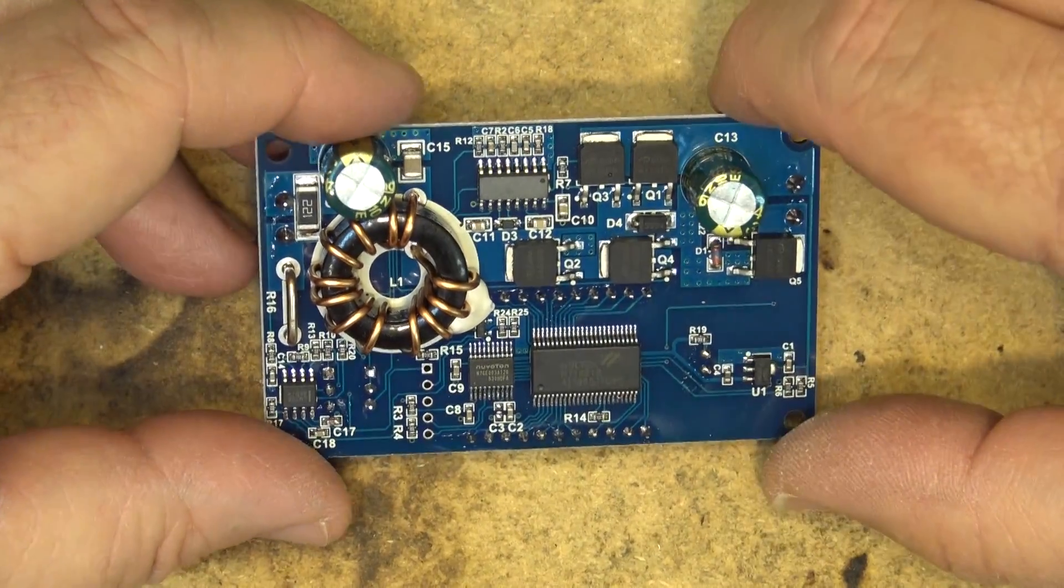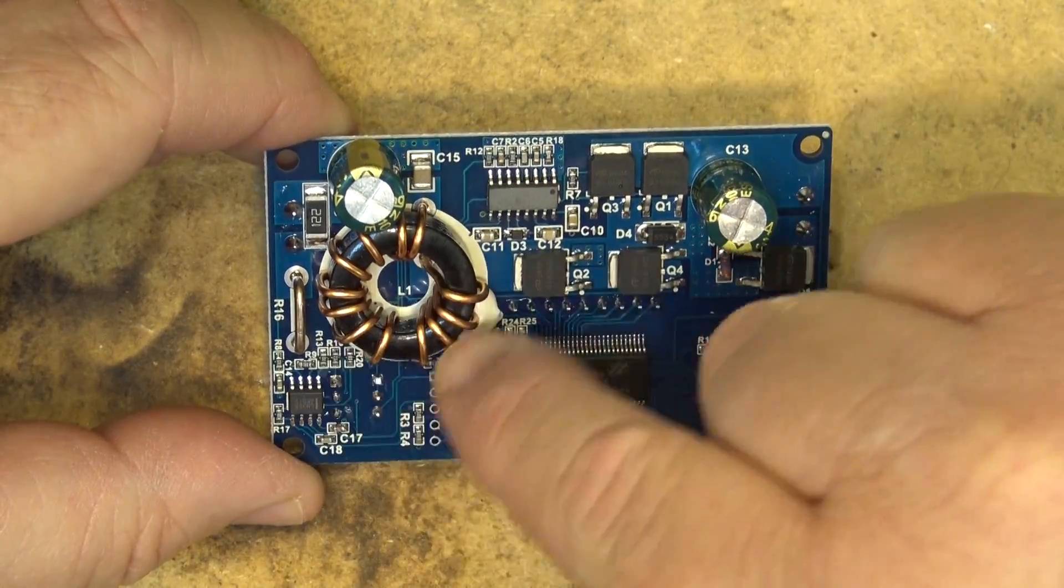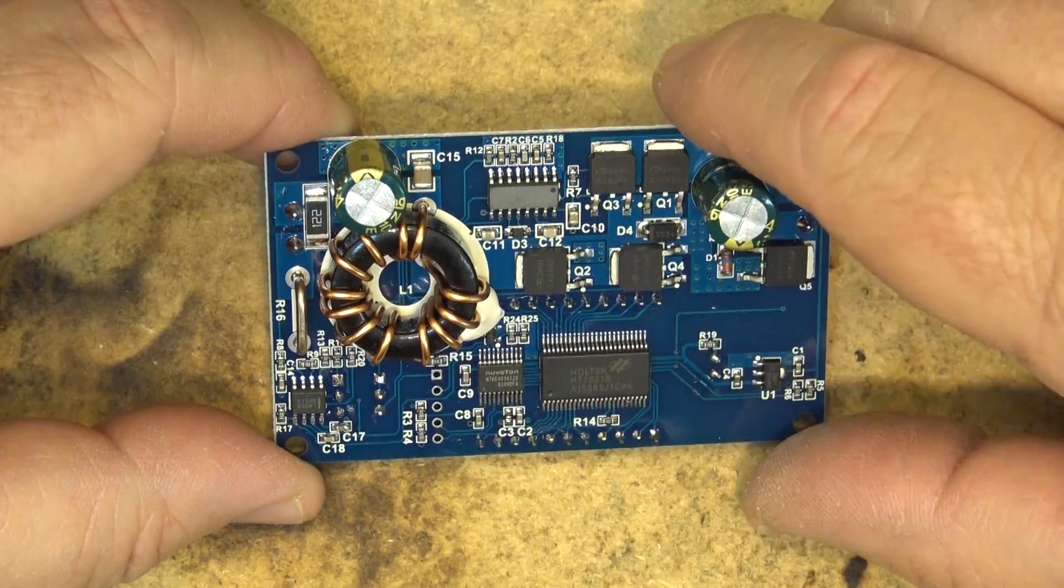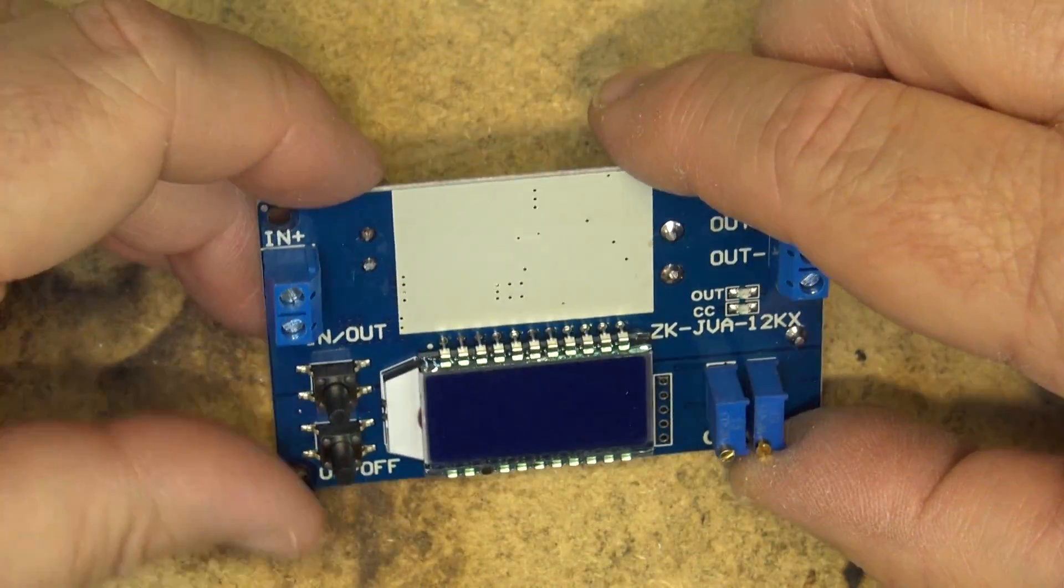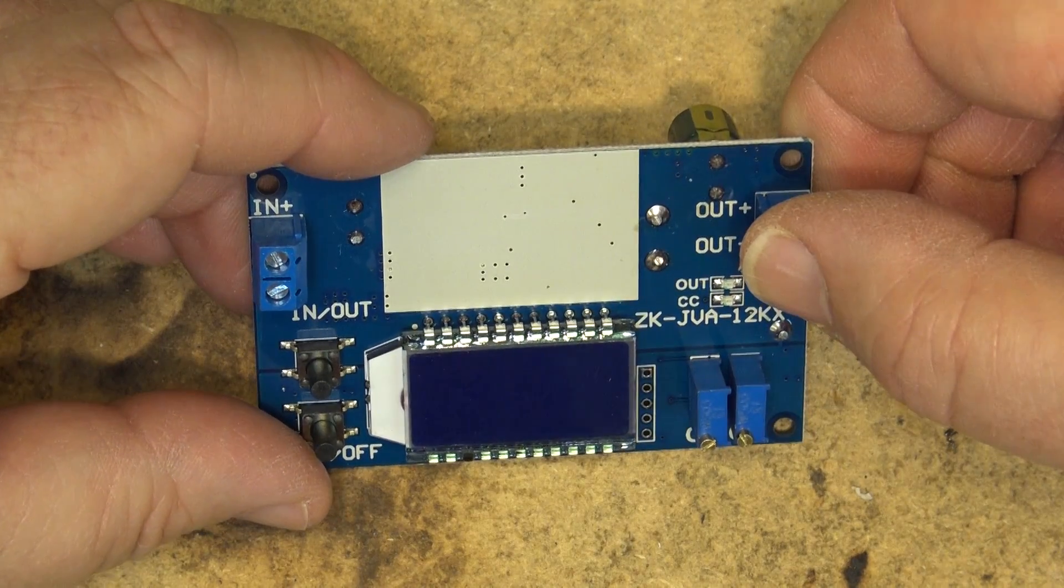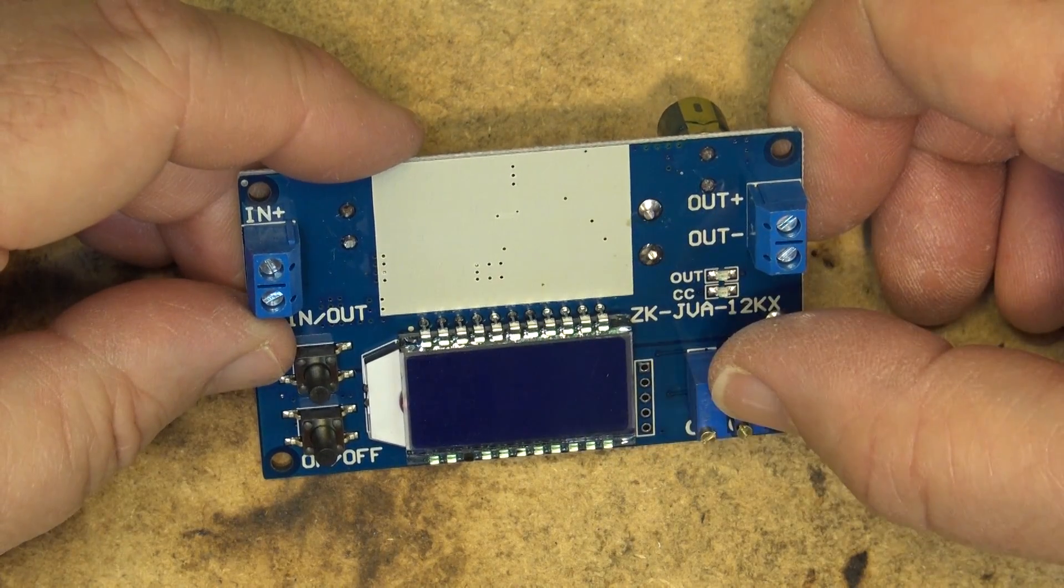So here's the back side of the board. As you can see it's got a huge power inductor as this unit will pass 10 amps continuous. What it is of course is it's a down converter. You feed it with your input voltage and then you get an output voltage and you can limit the current and the voltage.